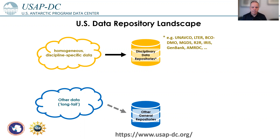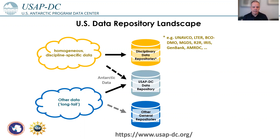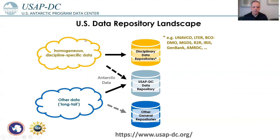A couple years back, NSF — the National Science Foundation — created USAP-DC as a data repository to host Antarctic data. It can be somewhat discipline-specific if no other repository exists for those. For example, we are hosting glaciology data, but it's also there to host all other kinds of Antarctic data that don't fall in any other disciplinary categories.